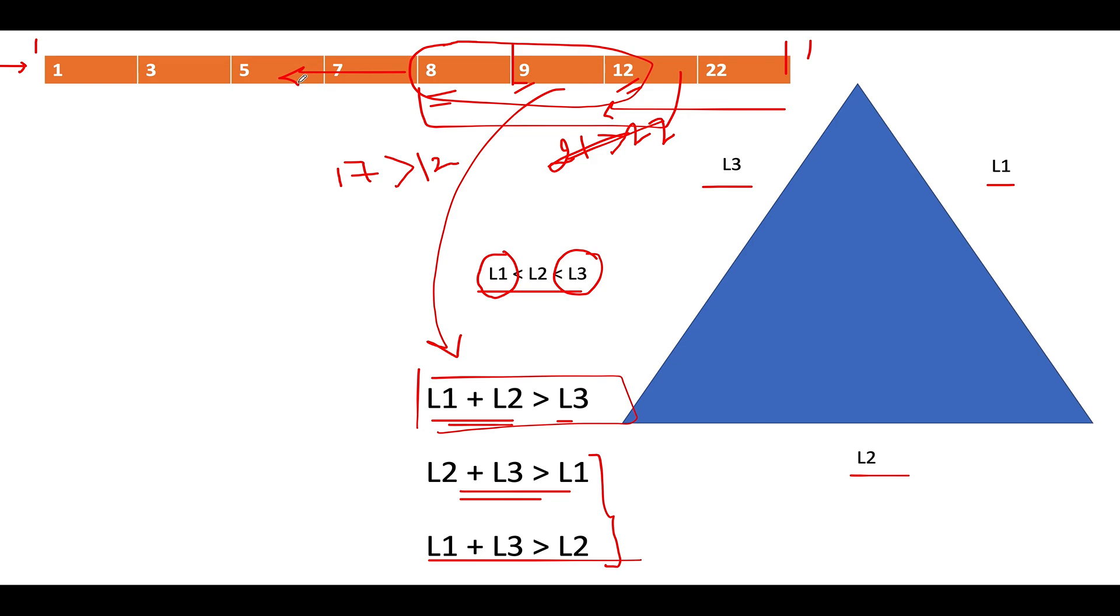We will abort the process there and then itself and return the perimeter - sum of these three sides: 8 plus 9 plus 12, that would be 29. And this becomes our answer.